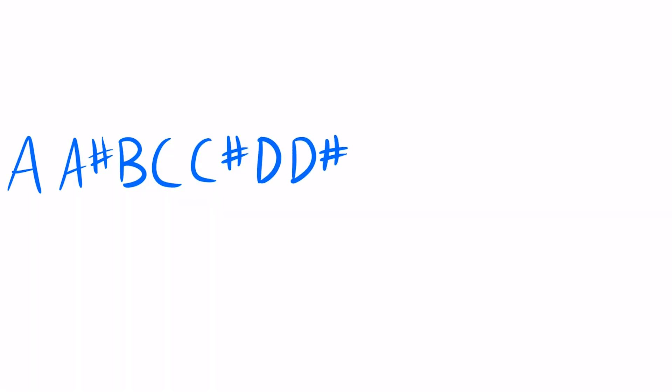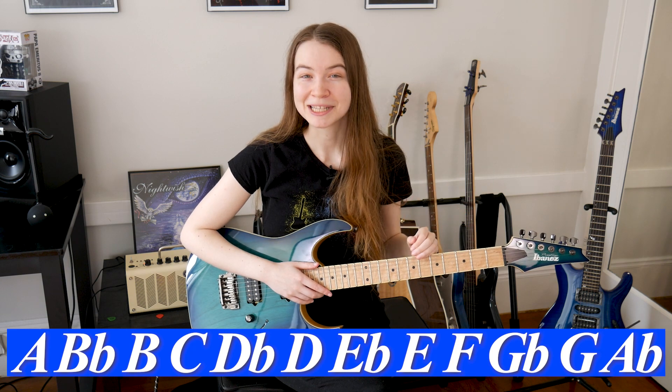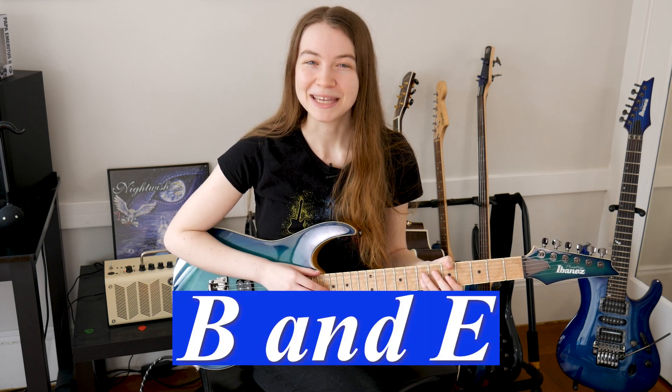When you first look at it, the guitar fretboard can definitely be intimidating. There are lots of frets and lots of finger positions, but in reality there are actually only 12 notes. These notes are A, A sharp, B, C, C sharp, D, D sharp, E, F, F sharp, G, and G sharp. You could also state these notes in terms of flats instead of sharps, but that's not super important right now. One important thing to keep in mind is that every note has a sharp except B and E. So there's no B sharp and there's no E sharp.